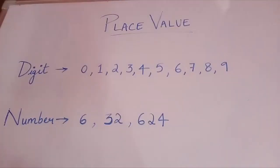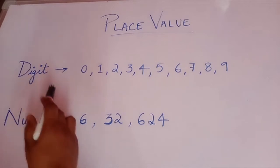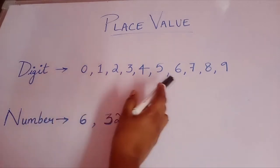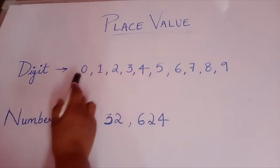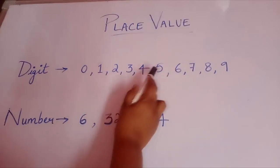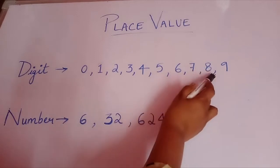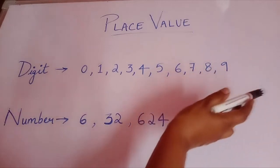First I will teach you place value once again. But before that, I want you all to know what is a digit and what is a number. Now let me tell you what is a digit. Digits are 0 to 9 — that means 0, 1, 2, 3, 4, 5, 6, 7, 8, and 9 are digits.